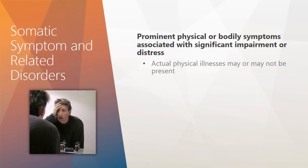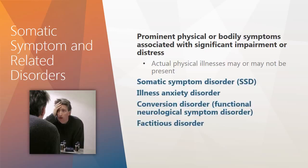Let's move on now to take a look at the somatic symptom and related disorders. They are characterized by prominent physical or bodily symptoms associated with significant impairment or distress. Actual physical illnesses may or may not be present. They include somatic symptom disorder, illness anxiety disorder, conversion disorder, and factitious disorder. A number of factors may contribute to the development of these disorders as well as the dissociative disorders, so be sure you carefully study this chapter and understand how the multipath model provides explanations.